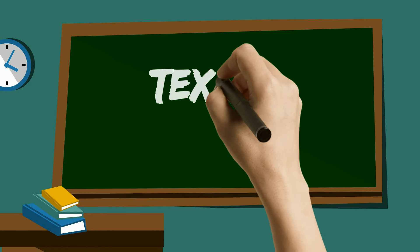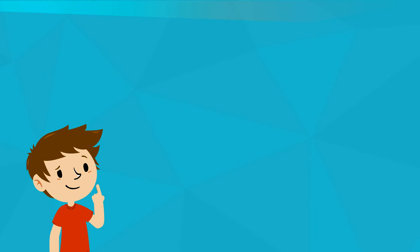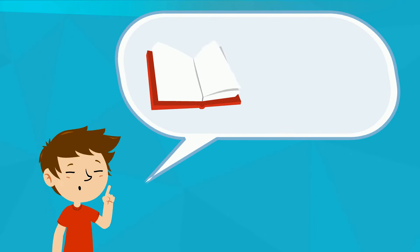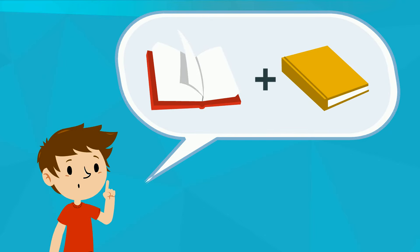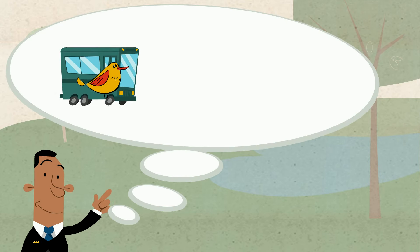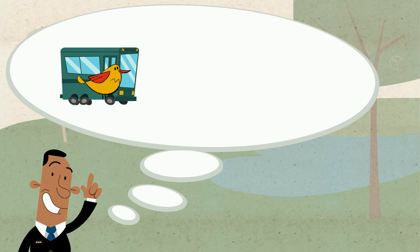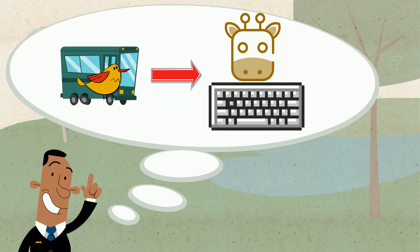Now let's take a look at text-to-text connections. When I am making a text-to-text connection, I am relating something from the story that I am currently reading to a story that I have read in the past. For example, when Pigeon wants to drive the bus in Don't Let the Pigeon Drive the Bus, it reminds me of when the cows wanted electric blankets from the farmer in Click Clack Moo, Cows That Type.